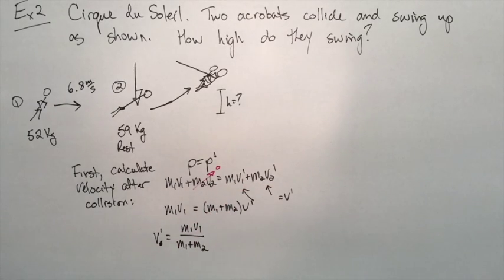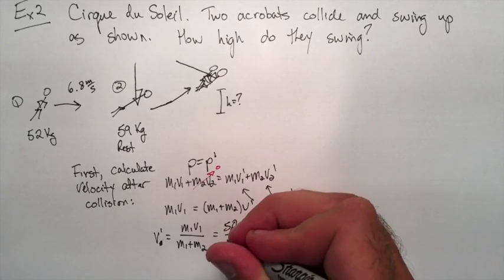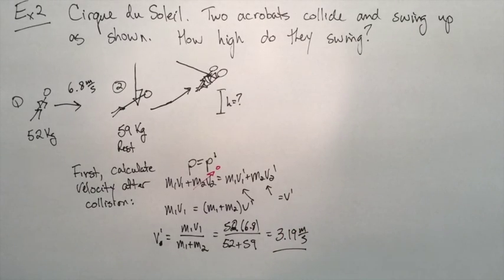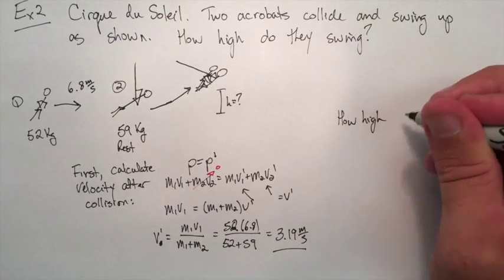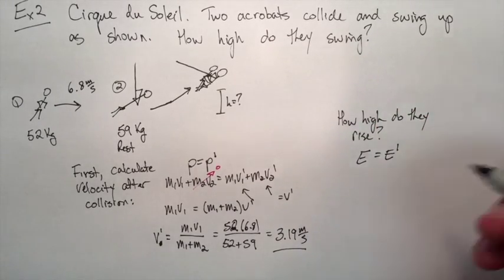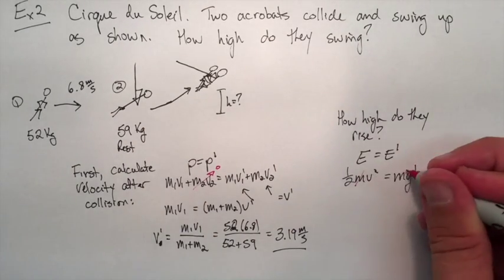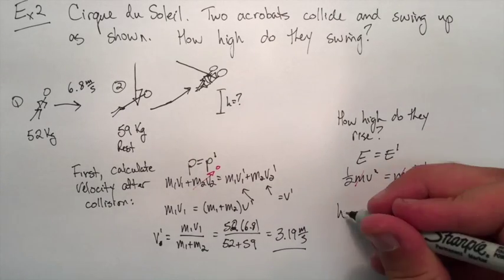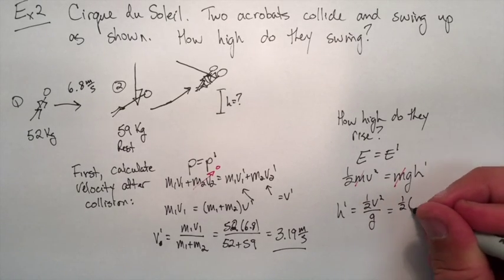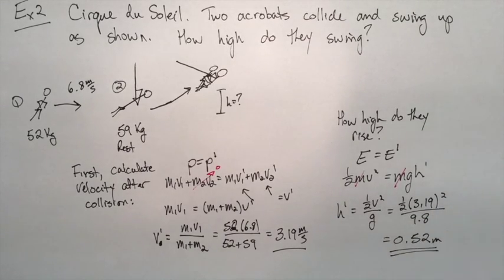That's the velocity of them combined afterwards. We rearrange, put in our values, and find that after they grab onto one another, the velocity here is going to be 3.19 meters per second. Using that, how high do they rise? We're just going to use energy on this side where we know the velocity at the bottom of that pendulum versus how high they rise. Kinetic energy equals gravitational potential. We're going to solve for the H prime. We rearrange, put in our numbers, and we find that they rise to a height of 0.52 meters.